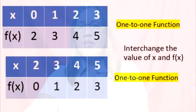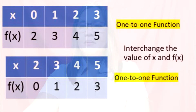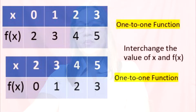To start our lesson, we have a table of values. For x, we have 0, 1, 2, 3. For f(x), we have 2, 3, 4, 5 — which is a one-to-one function. Let's interchange the values of x and f(x). So we have for x: 2, 3, 4, 5, and for f(x): 0, 1, 2, 3. It's still a one-to-one function.